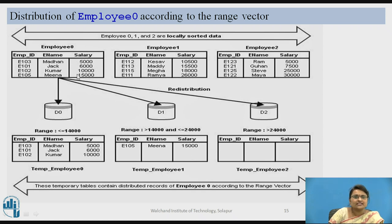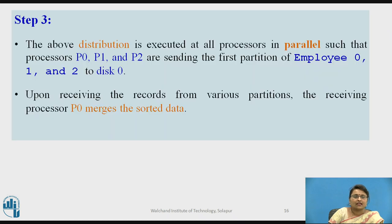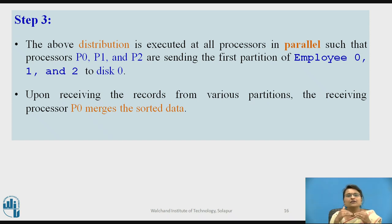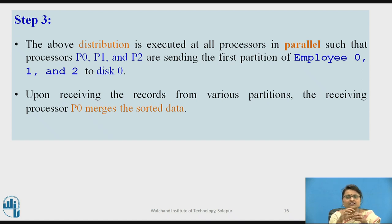You can see the distribution of employee_0 according to the range vector. Contents of D0 are now distributed: records below 14,000 go to one range, records above 14,000 to another, and no contents exceed 24,000 in this disk. The same distribution is executed in all processors parallelly, and upon receiving the records, P0 merges the first range, P1 the second range, and P2 the third range.